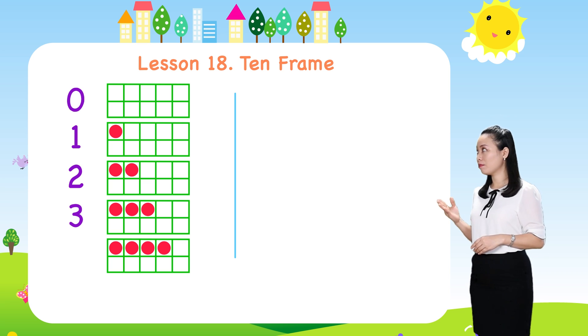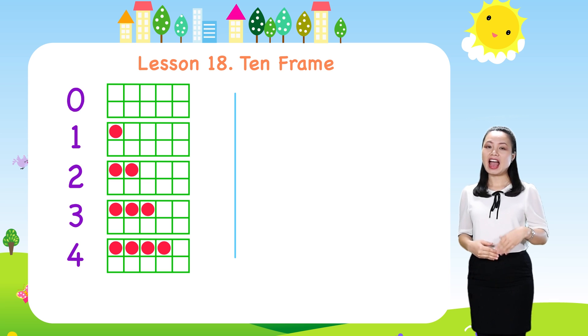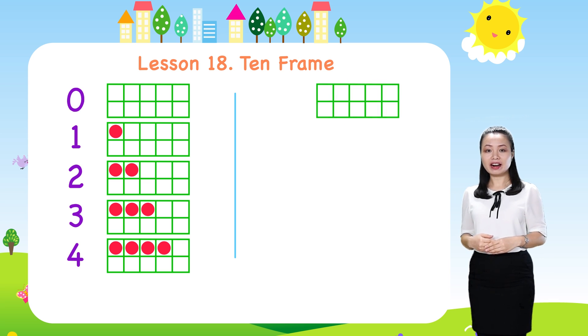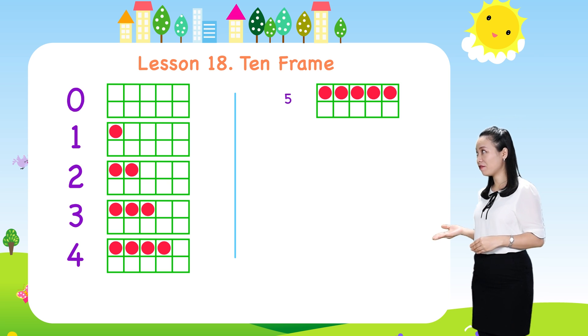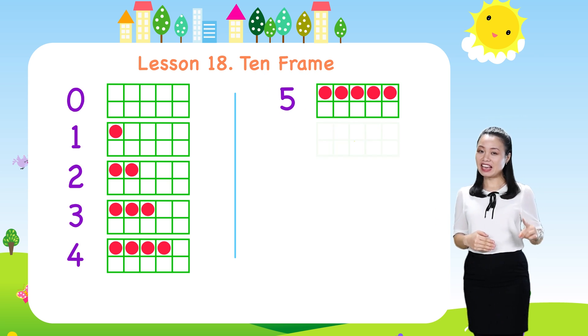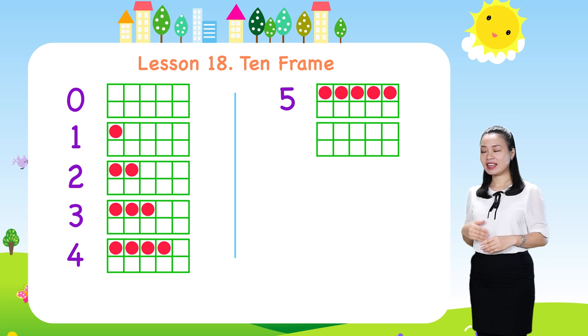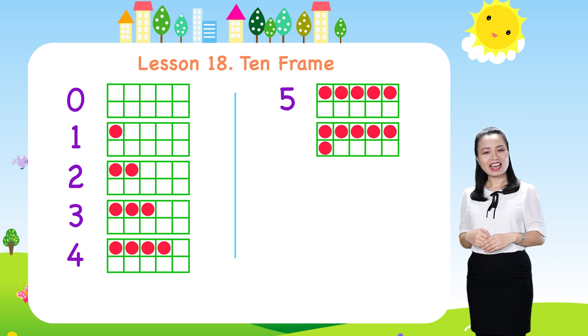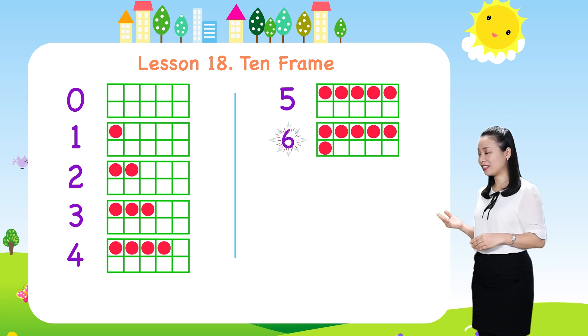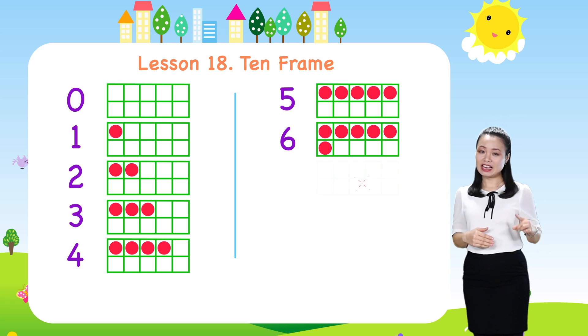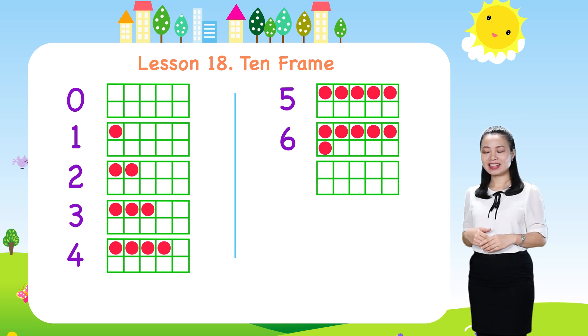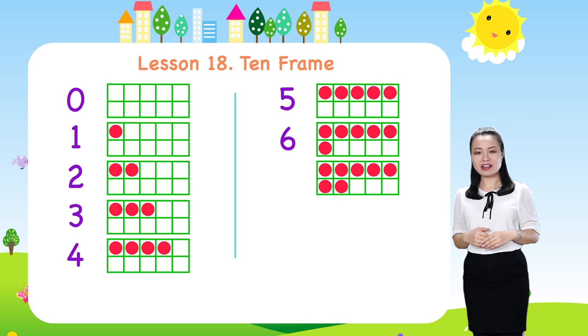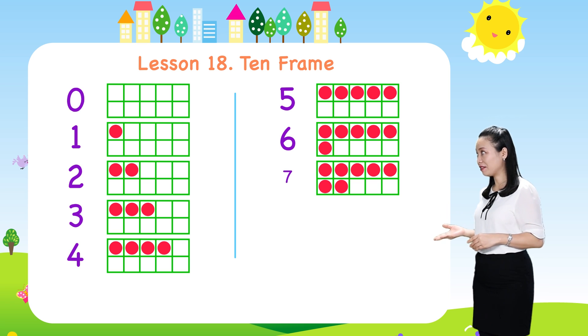If there are four dots in the frame, it represents number four. If there are five dots in the frame, it represents number five. If there are six dots in the frame, it represents number six.